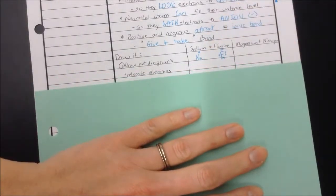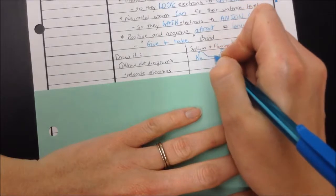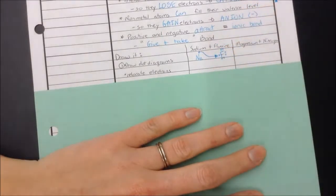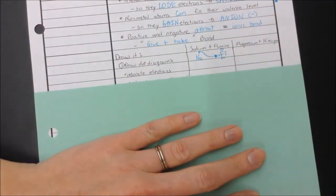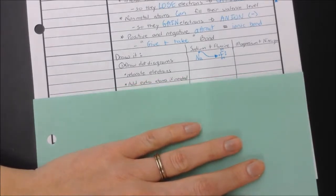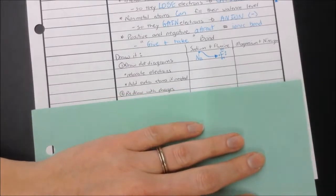What is going to happen is we're going to just relocate those electrons. So there it goes. Here you go, fluorine. Take my electron. That's what sodium says. We don't need any extra atoms. We'll need some in the magnesium nitrogen one.